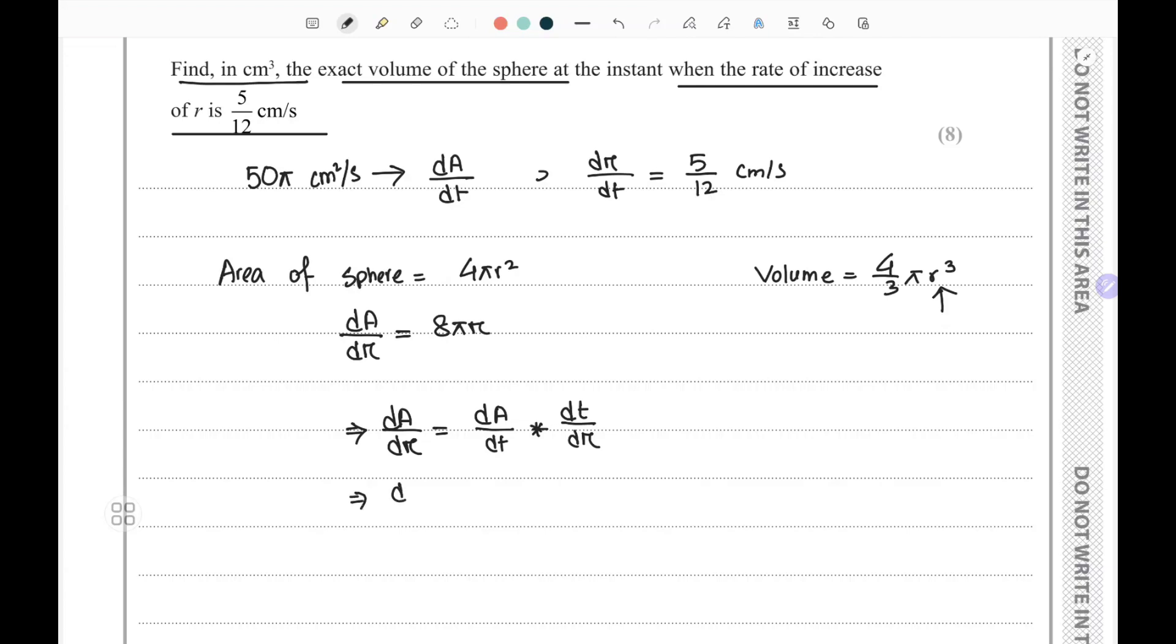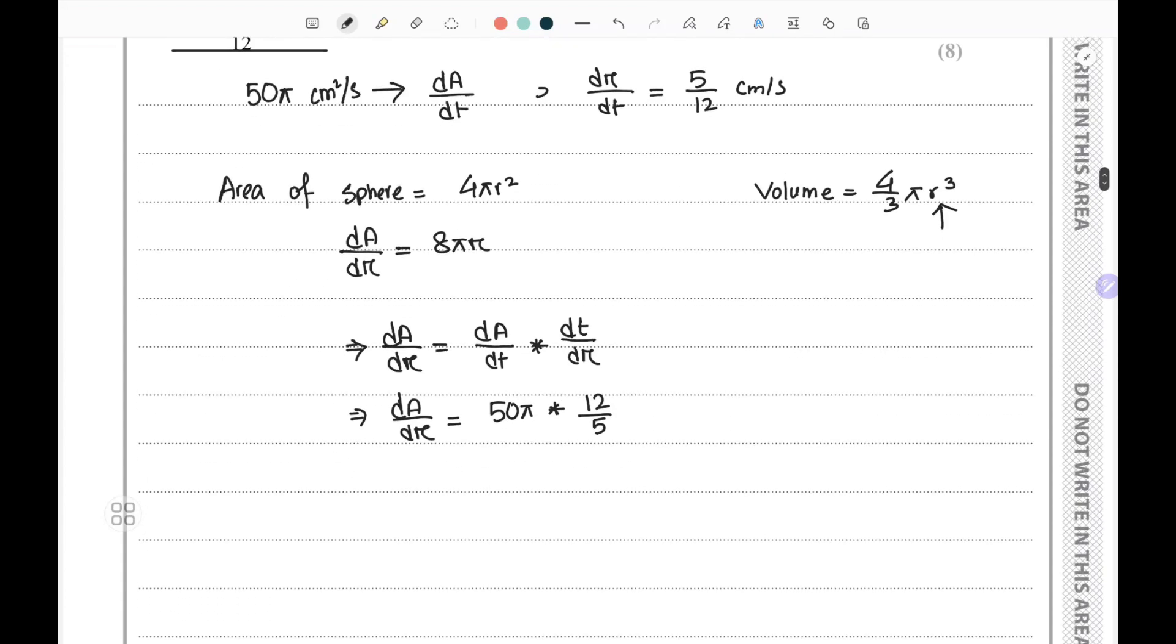Here dA/dr can be written as dA/dt, which is 50π, multiplied with dt/dr, that is 12/5. And this entire thing equals 8πr, which equals 12 times 50.